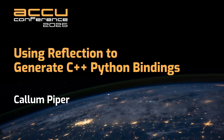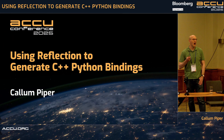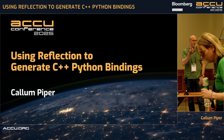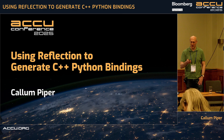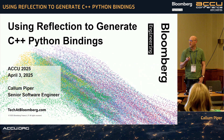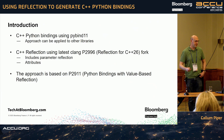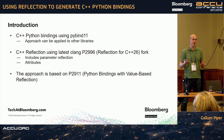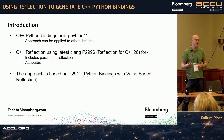Welcome to my talk today on Using Reflection to Generate C++ Python Bindings. I'm Calum Piper. How many of you went to Alex's talk yesterday on C++HARP? A few of you. That saves a bit of time, but we'll still go through the Python bindings part of this. This talk is about using PyBind 11 specifically for Python bindings and how we can automate some of that code using Reflection.